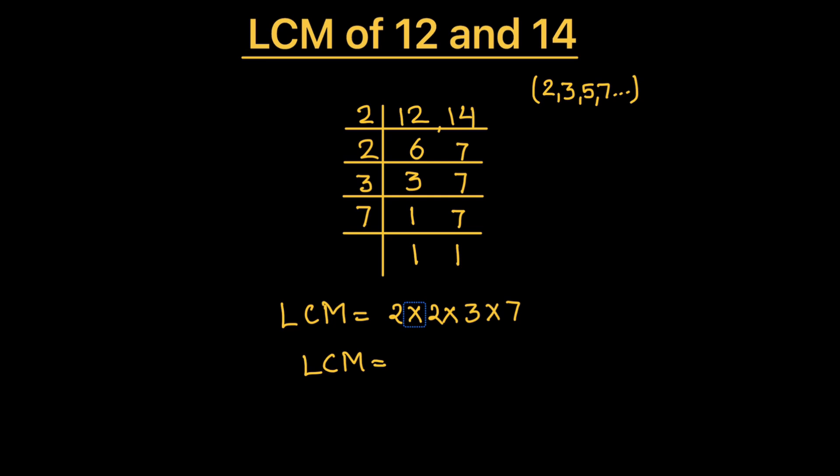So LCM will be 2 times 2 is 4, 4 times 3 is 12, and 12 times 7 is 84. So the LCM of 12 and 14 is 84. This is how we find the LCM of any numbers using prime factorization method.